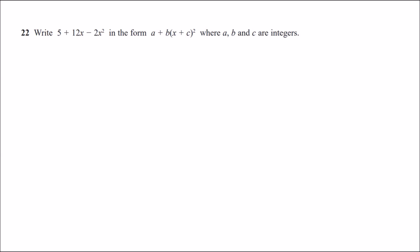Alright, number 22. So it says, write 5 plus 12x minus 2x squared in the form of this where a, b and c are integers. This particular form is one of something known as completing the square. Now to move something into that particular form, and by the way, this is not a usual form, we should always rewrite this in terms of a standard quadratic formula. So let's put this in order: minus 2x squared plus 12x plus 5.